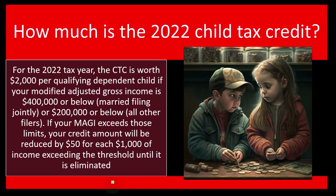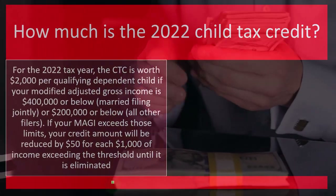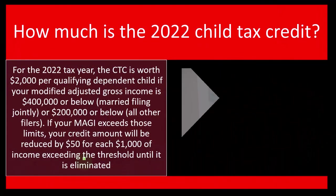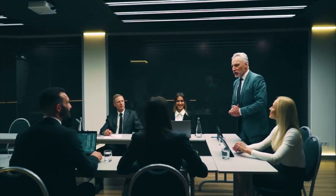When discussing the Child Tax Credit with people, you can give the general concept: $2,000. It changed substantially in 2021 and is basically reverting back to its original format. There's a fairly high income limit, and it phases out once you get past that limit. You probably don't need to know exactly what the phase-out is in your mind — you can rely on software for that — because your job may be to discuss, visualize, and plan for this so you can talk to people and make projections.